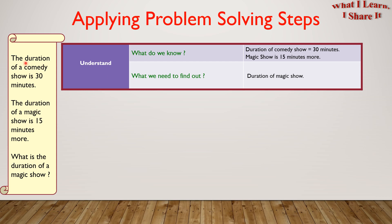So from the question we know that the duration of a comedy show equals 30 minutes. The magic show is 15 minutes more. And what we need to find out is the duration of the magic show.